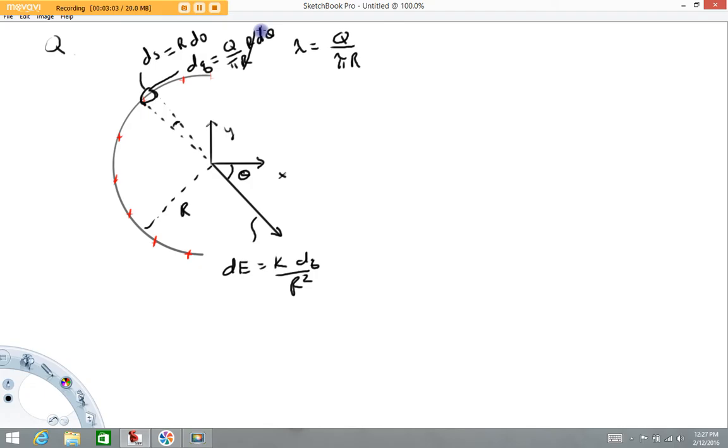We're looking for vector quantities. K DQ over R squared is the magnitude of the electric field due to this chunk. But when we do an electric field calculation, because electric fields are vectors, we have to deal with them in terms of components. I can break this electric field vector into x and y components.